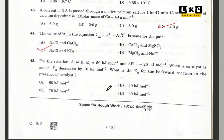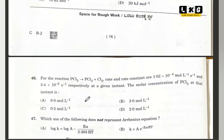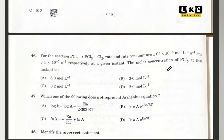Question number 45: for the given reaction, when a catalyst is added, activation energy decreases by 10 kJ. The activation energy for the backward reaction in presence of a catalyst — option A is correct. Question number 46: for the given reaction, rate constants are given; the molar concentration of PCl5 at the given instant is option B. Question number 47: which of the following does not represent the Arrhenius equation? The one with a minus sign — that option is correct.